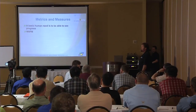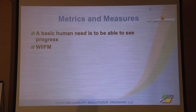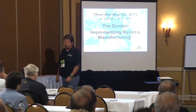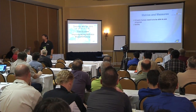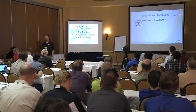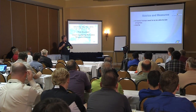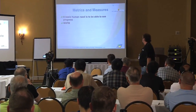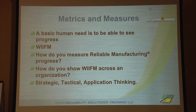A basic human need is to be able to see progress. If we're trying to change behavior, we have to be able to see that progress. If we can't see what the progress is, we give up. Metrics are our form of doing that — and also 'what's in it for me?' If you want me to do something I may not want to do, the only way you can get me to do it is to show what's in it for me. We don't do a good job of that, certainly at the craft level. What's in it for the manager or plant manager is probably completely different from what's in it for the craftsman. So how do you measure reliable manufacturing progress?